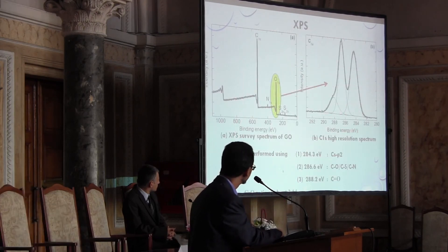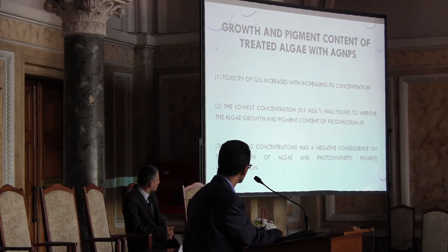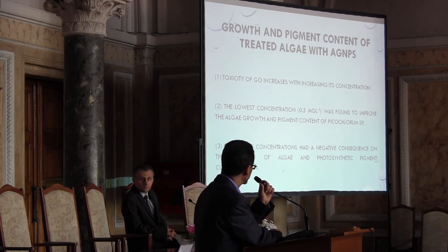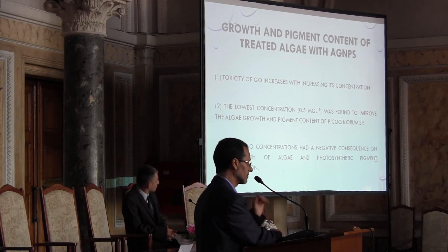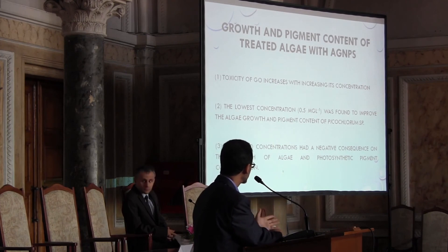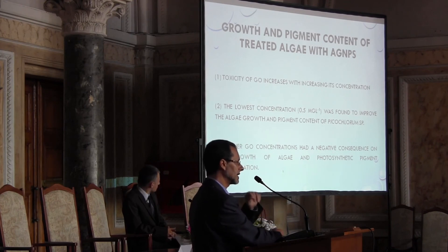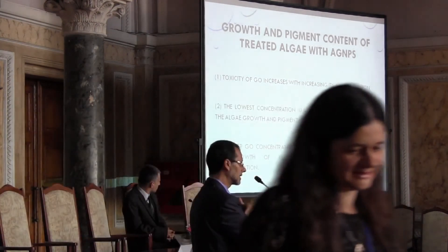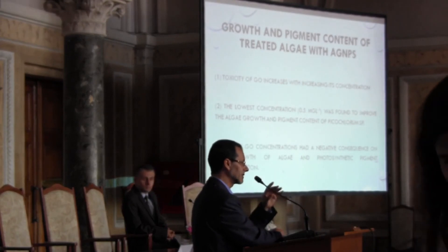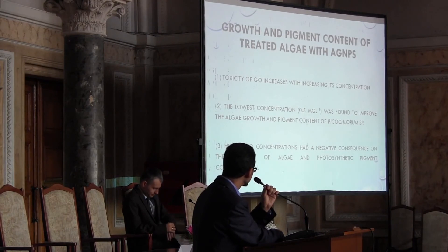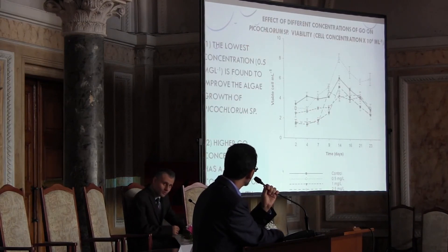XPS was also used for characterization. We found that the toxicity of graphene oxide increases with increasing concentration. The lowest concentration of 0.5 mg/L was found to improve algae growth, so concentration has a dual effect: at low concentration it favors algae growth, but at higher concentrations it has the opposite, toxic effect.